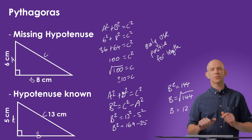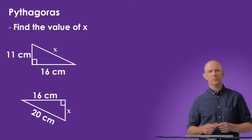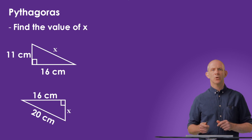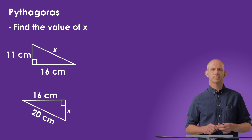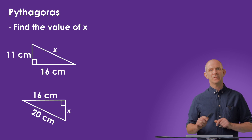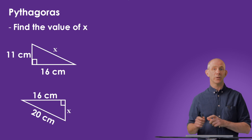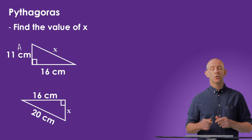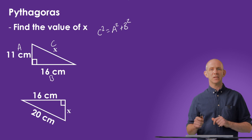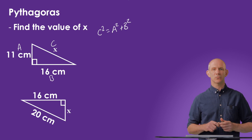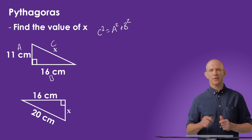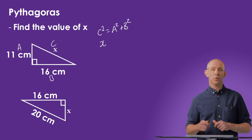Let's have a look at some more questions using Pythagoras. With these questions we're being asked to find the value of X, which is a side on a right-angled triangle. The first step is always to label the sides. In this first example, X is on the hypotenuse, therefore that's our C variable in our formula. Our formula is C squared equals A squared plus B squared. We can now substitute in our values to show that X squared equals 16 squared plus 11 squared.